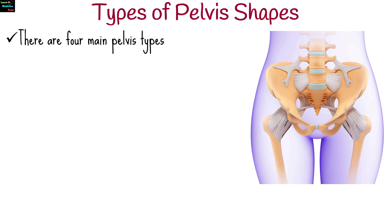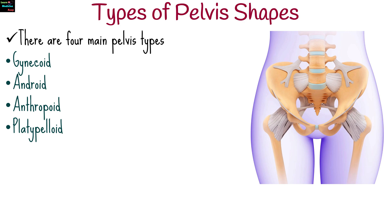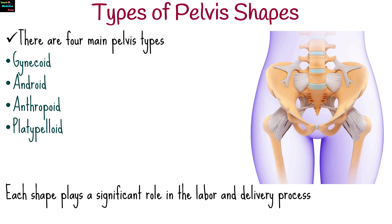There are four main pelvis types: gynecoid, android, anthropoid, and platypelloid. Each shape plays a significant role in the labor and delivery process.